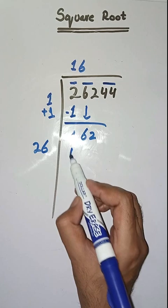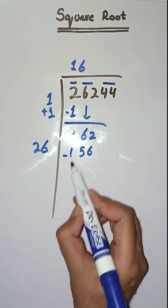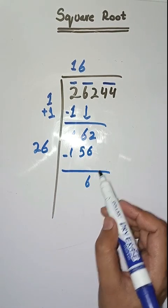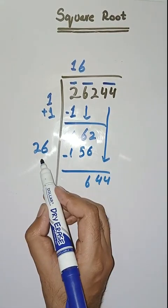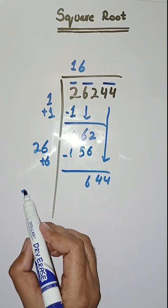Next pair we have 44, we'll write it below. Here we do 26 plus 6 which is equal to 32. Now we will take a number 2. 322 times 2 is 644.